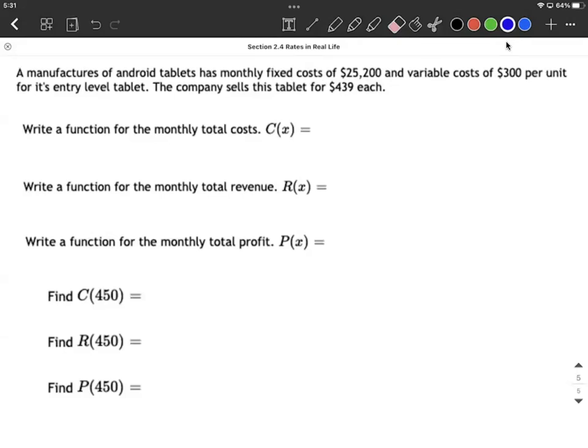Okay, so for every unit you have to pay an extra $300 to help create it, to make it. Alright, the company sells the tablets for $439 each and our goal here is we're going to create a cost function,